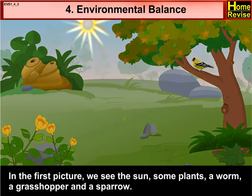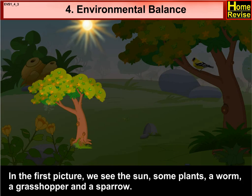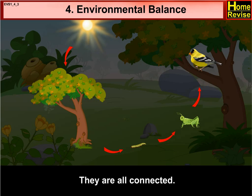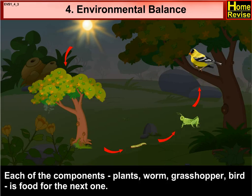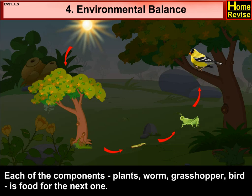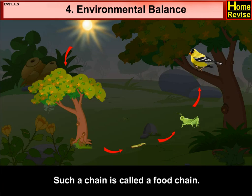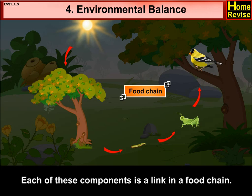In the first picture, we see the sun, some plants, a worm, a grasshopper and a sparrow. They are all connected. Each of the components — plants, worm, grasshopper, bird — is food for the next one. That is why we say that they form a chain. Such a chain is called a food chain. Each of these components is a link in a food chain.